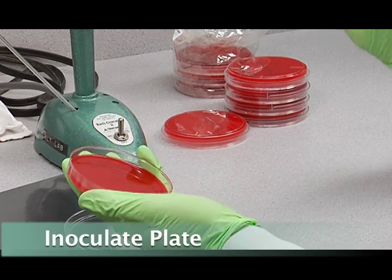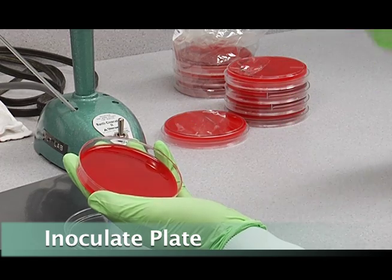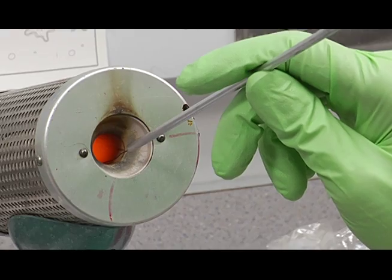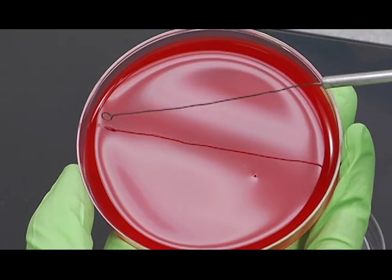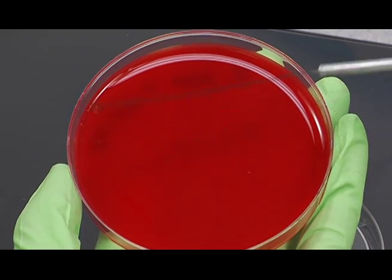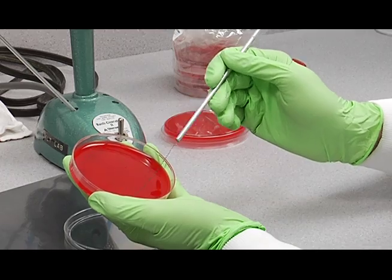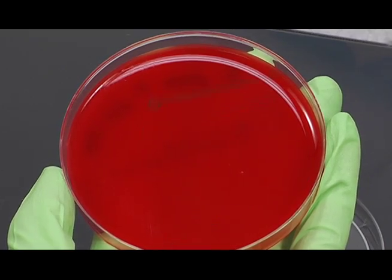So we'll inoculate the plate right there, over the 6 in my label. And then flame your loop. And then we're going to streak it very much the same way that we streaked the previous plate, the Staphylococcus aureus plate, except when we're finished streaking,